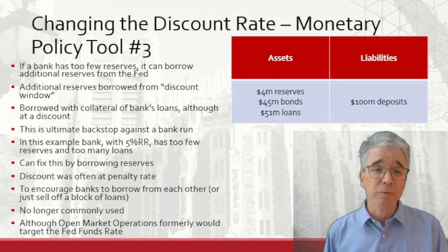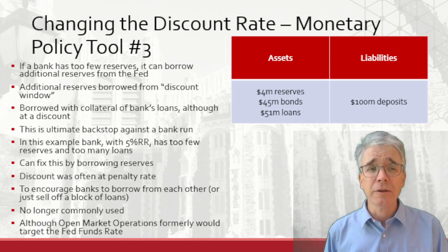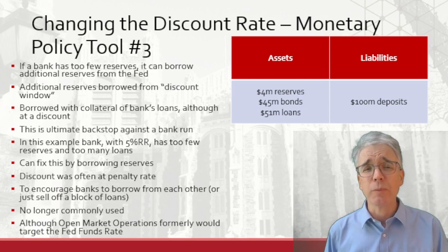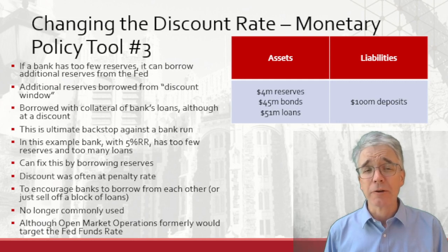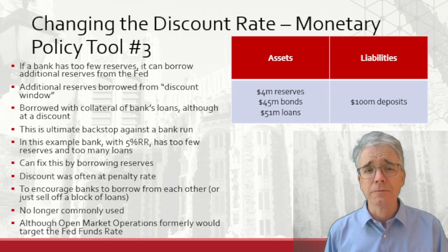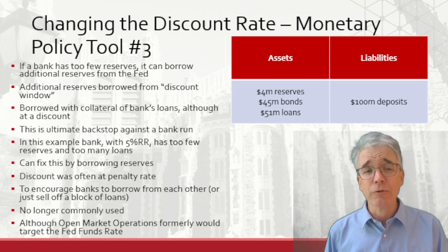Banks preferred to borrow from each other, since if they borrow from the Fed, that could provoke some questions from the regulators. It's not commonly used these days, but those additional reserves would be borrowed from the discount window. The bank would have to put up some collateral at a discount — loans of value 100 might be only worth 96 or 97 per 100, thus the discount. That's part of how the central bank provides a backstop to the financial system.